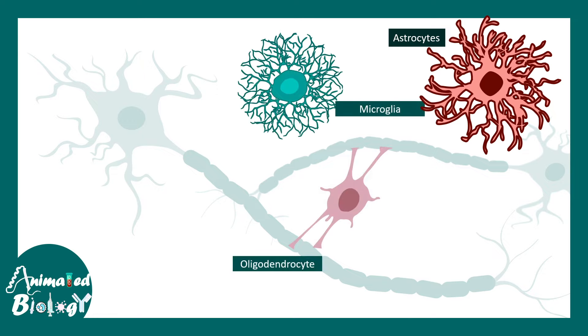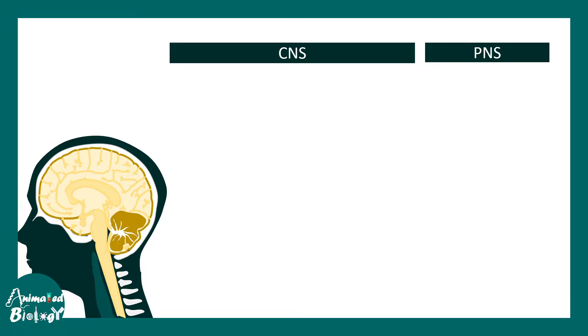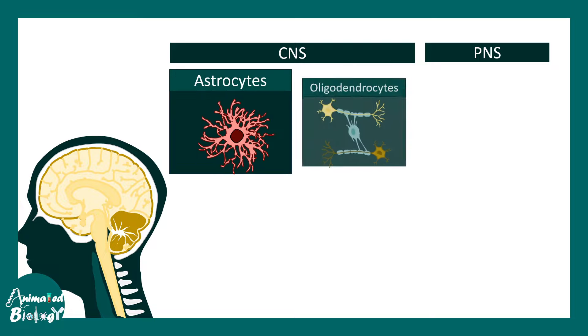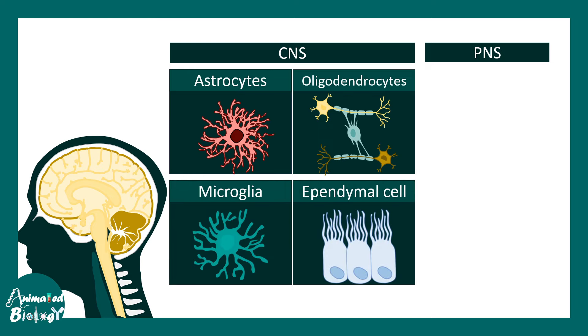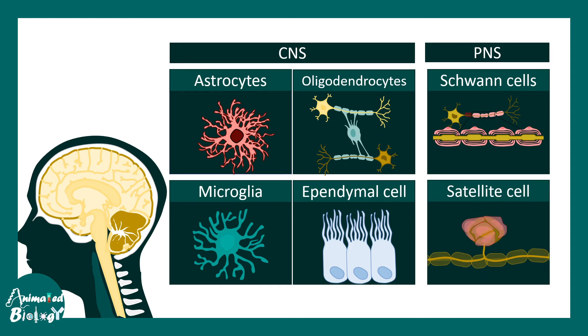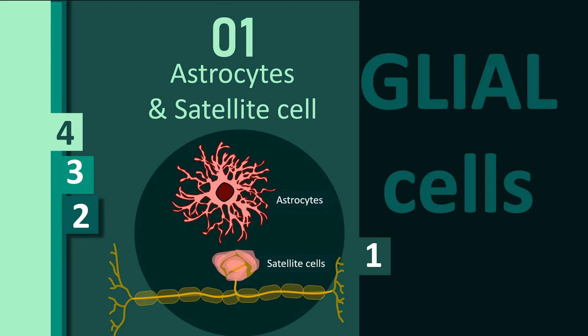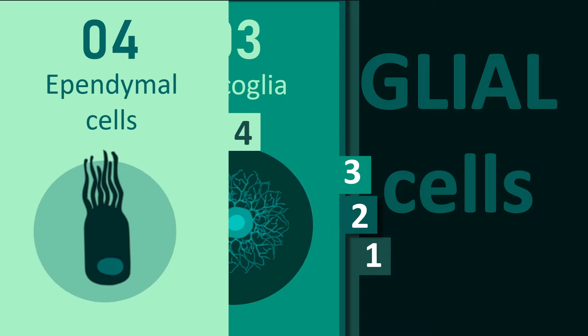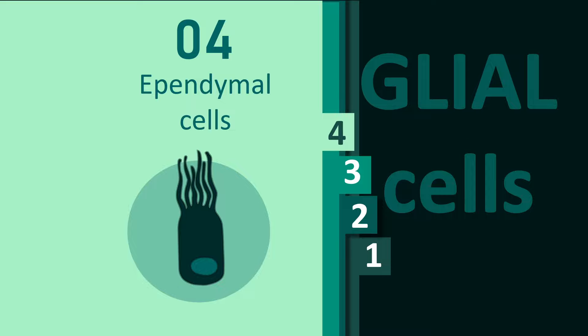Glial cells can be found in both CNS and PNS. In the CNS, astrocytes, oligodendrocytes, microglia, and ependymal cells are the key glial cell types. In the peripheral nervous system, Schwann cells and satellite cells are the key glial cell types. In this video we'll cover: first, astrocytes and satellite cells; second, Schwann cells and oligodendrocytes; third, microglia and its role in neuroinflammation; and finally, ependymal cells.